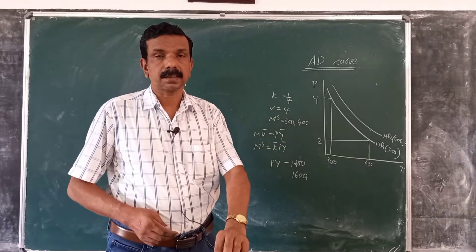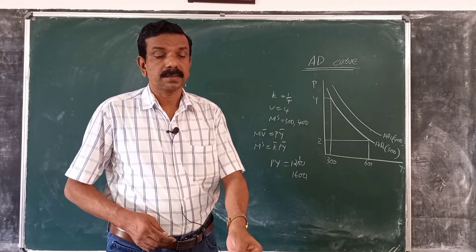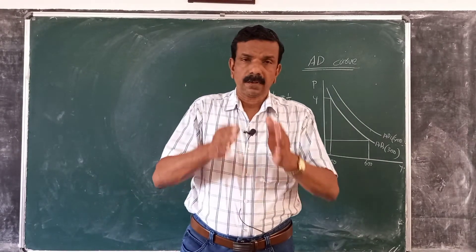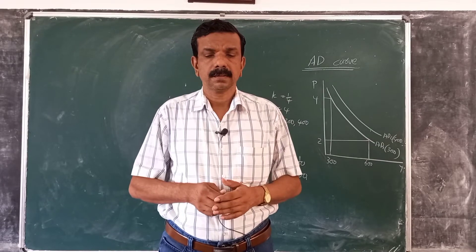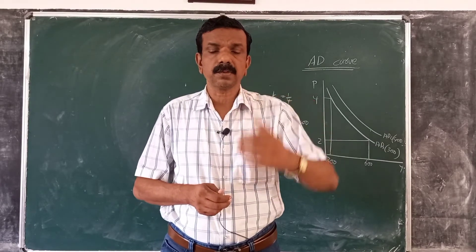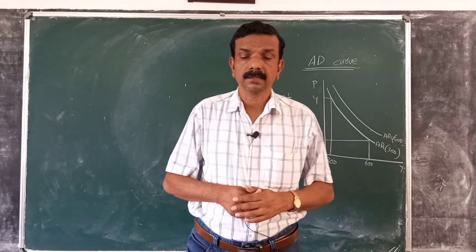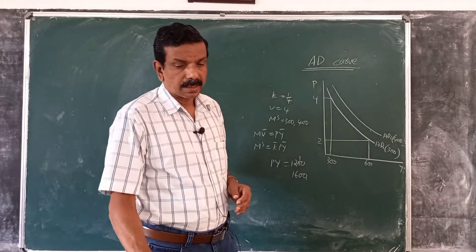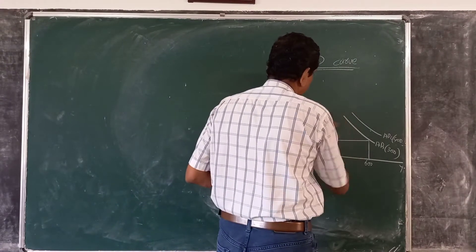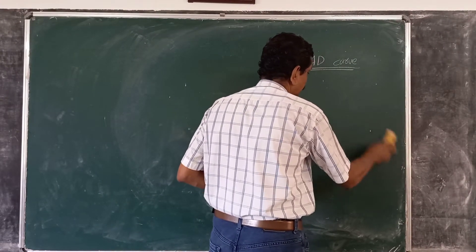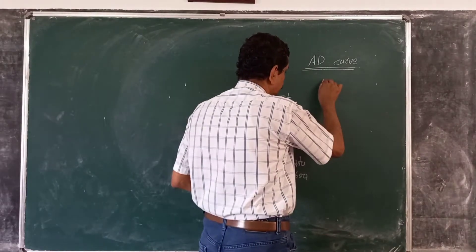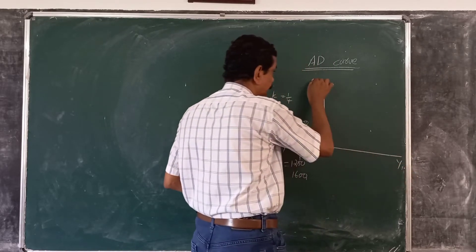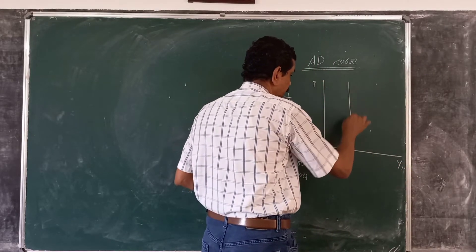As money supply increases, the aggregate demand curve shifts towards the right. So for a given money supply, we trace out a downward sloping aggregate demand curve. This downward sloping aggregate demand curve can be combined with the vertical aggregate supply curve to explain price determination in the classical model.